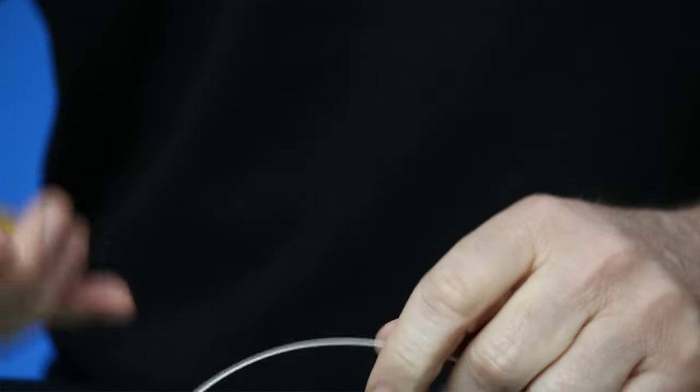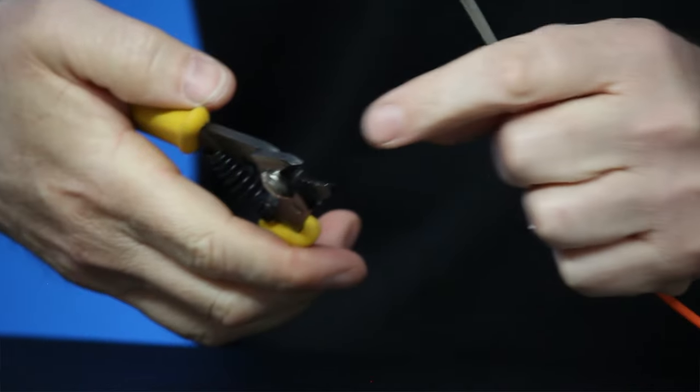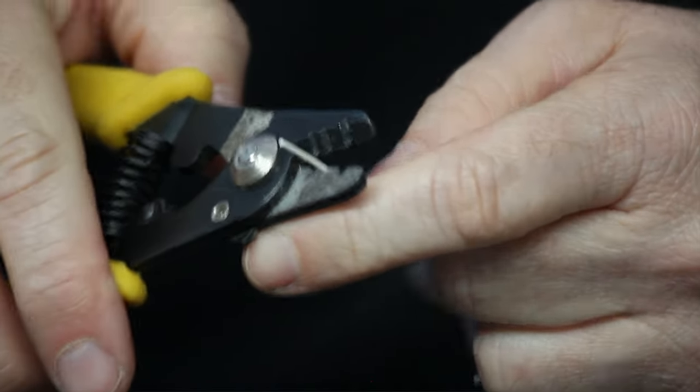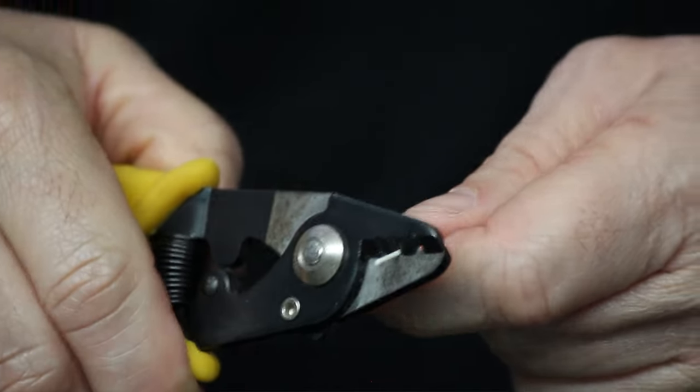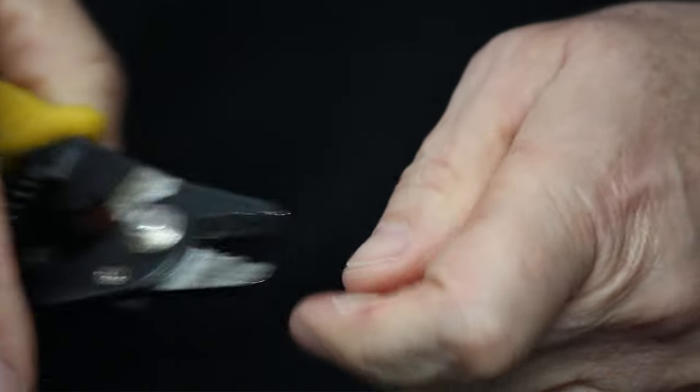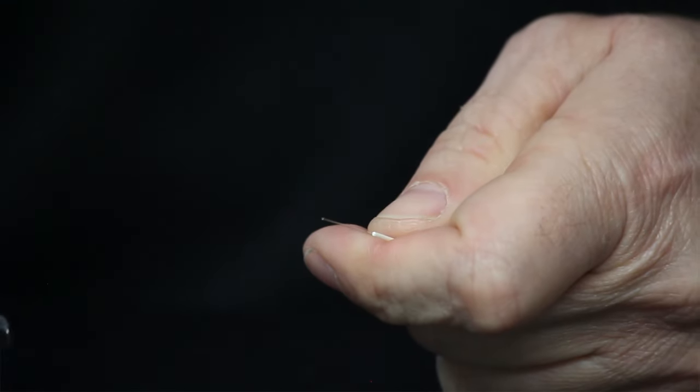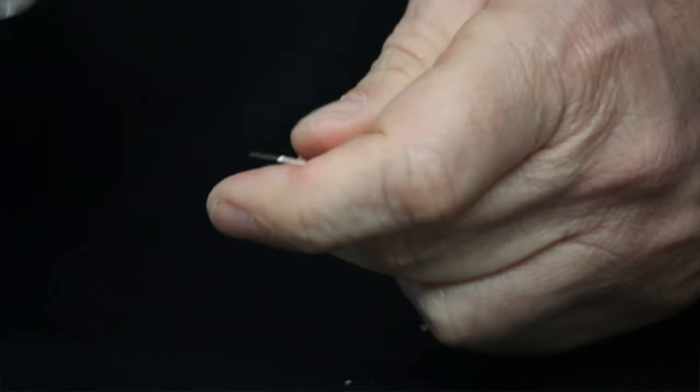So now we're going to take the three-hole stripper and we're going to use the second hole to strip off the 900 micron tight buffer. Now notice I'm doing small sections here as such and that's what you want to do. You want to nibble it off.